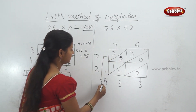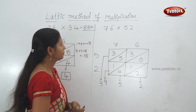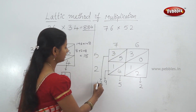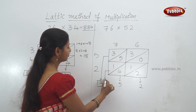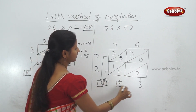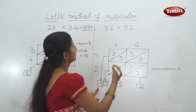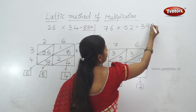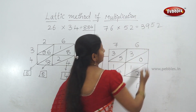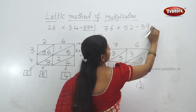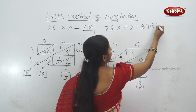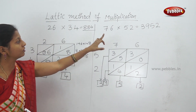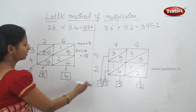There is only a single number 3 here, so we write it as is. The multiplication is complete: 76 times 52 equals 3952, a 4-digit number answer.